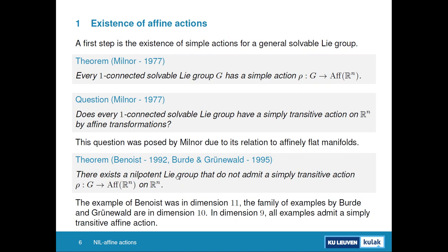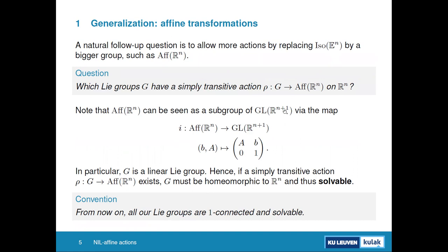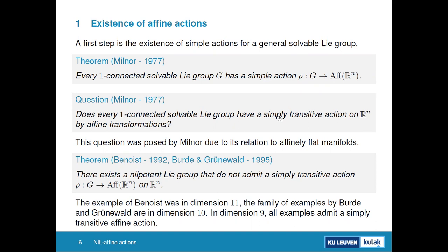The answer is no — there exist solvable Lie groups, even nilpotent ones, that do not have such an action. The first example was by Yves Benoist in 1992, in dimension 11. Then Burda and Grunewald gave a family of examples in dimension 10. Burda later showed that below dimension 10, all nilpotent Lie groups have such an action, so dimension 10 is minimal.